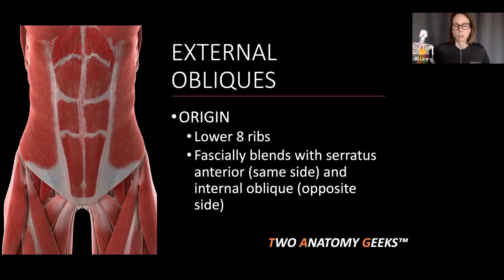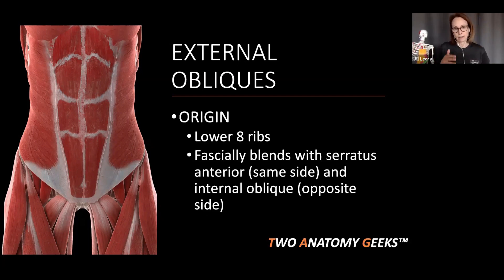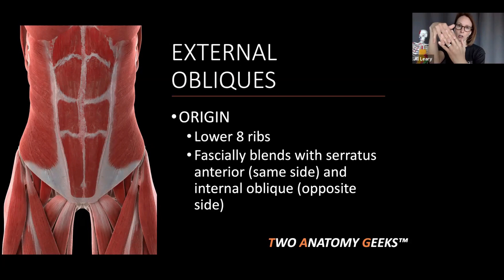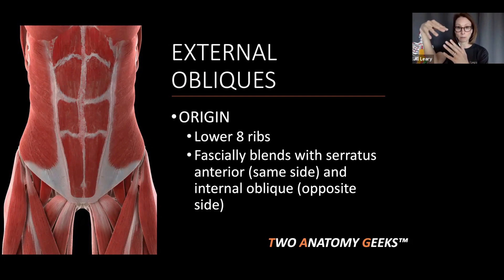So external obliques — the origin starts at the ribs, the lower eight ribs, and then they travel down at an angle. They descend and are going to start to insert onto the abdominal aponeurosis. When you look at how the serratus anterior dovetails with that superior part of the external obliques, there is a fascial blending that happens between the serratus anterior on the same side.